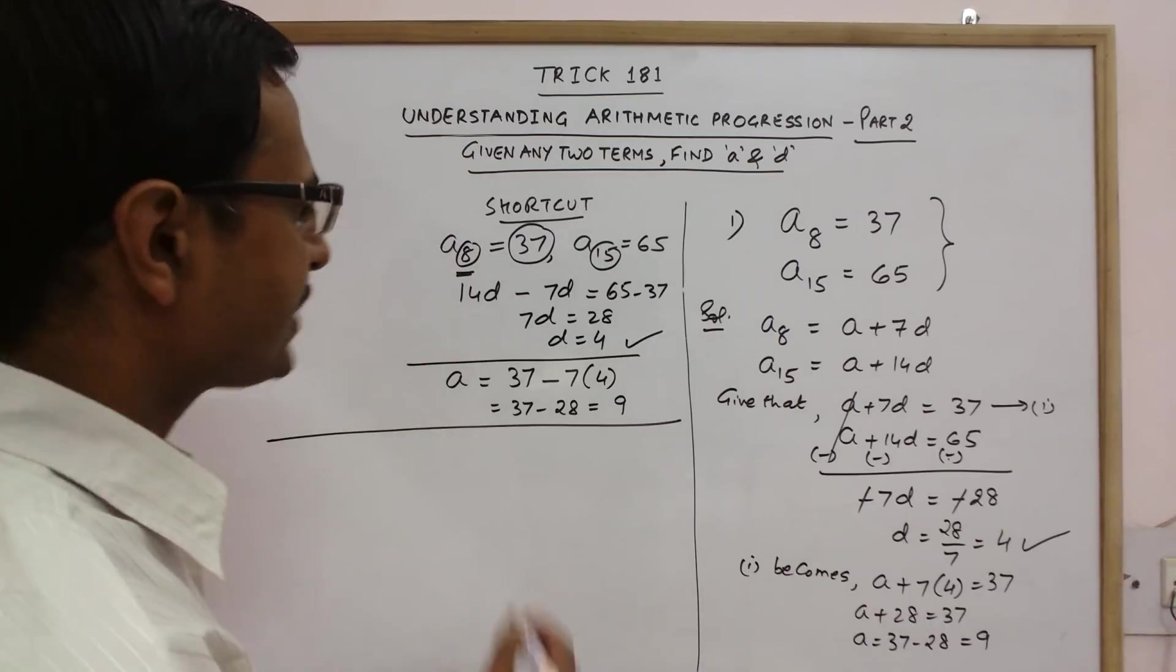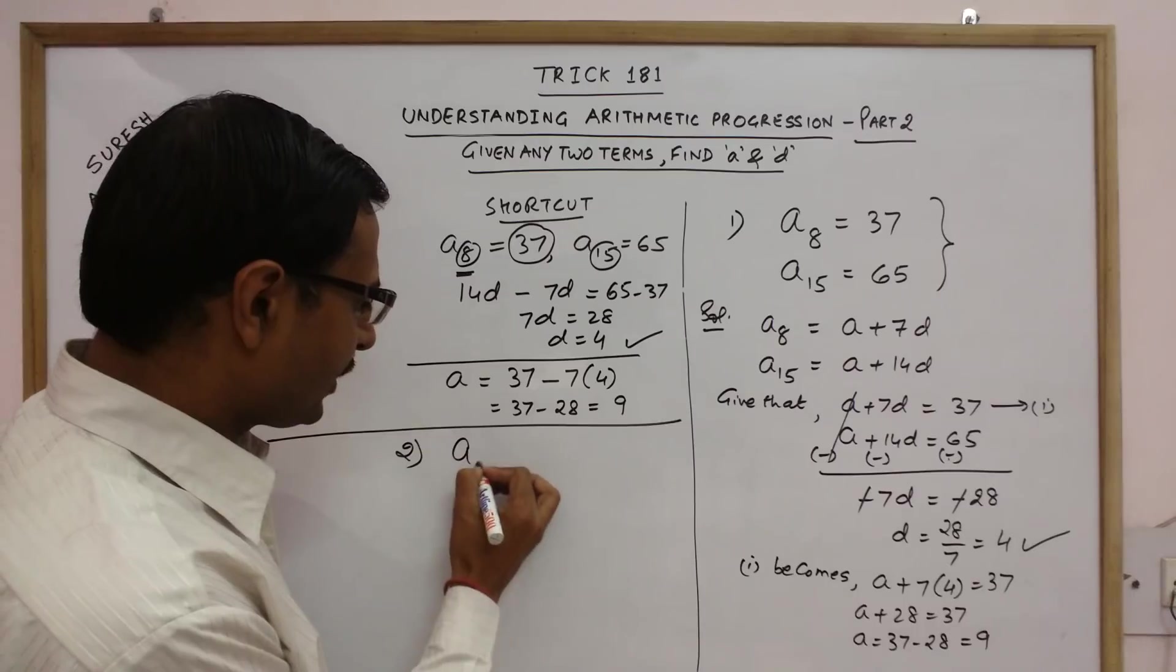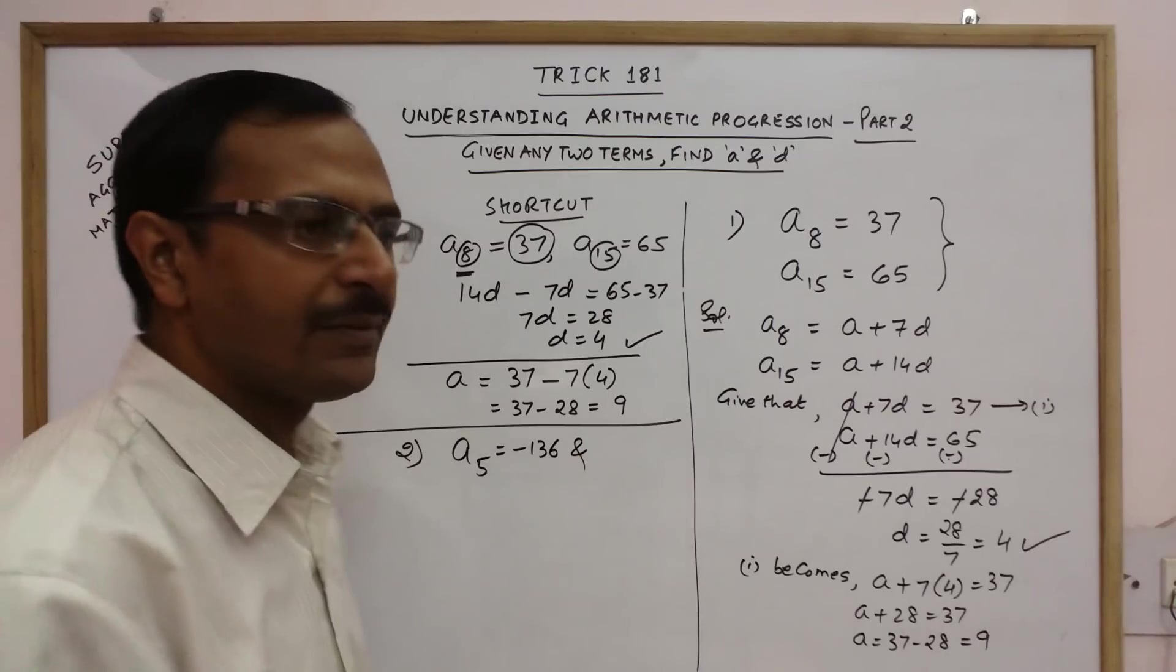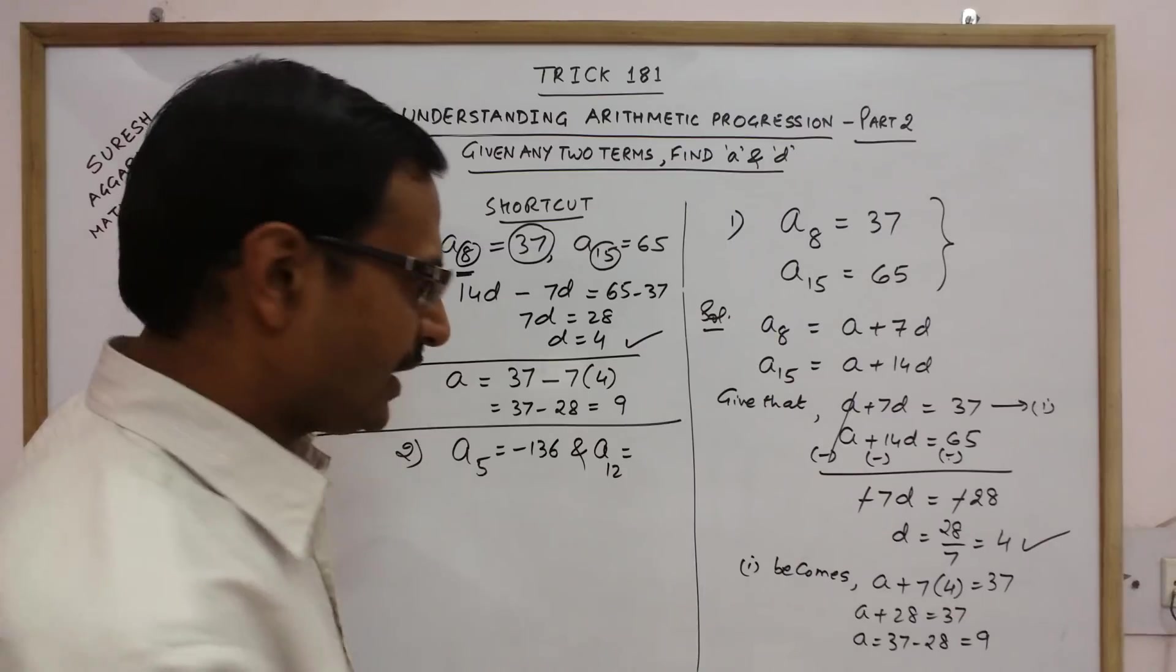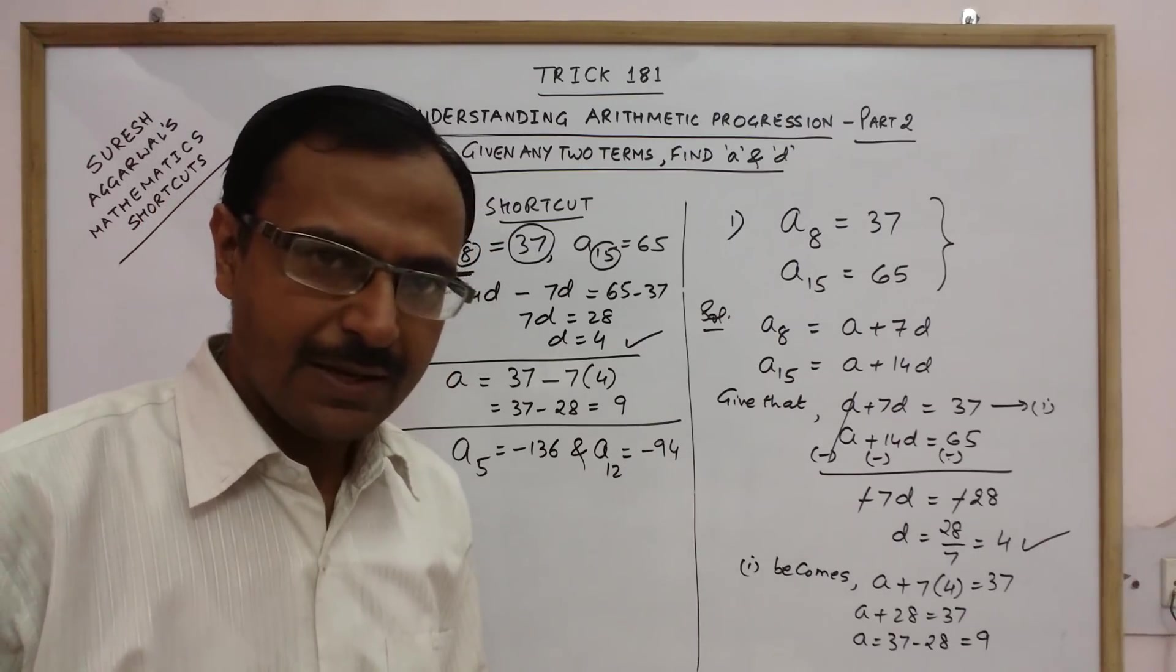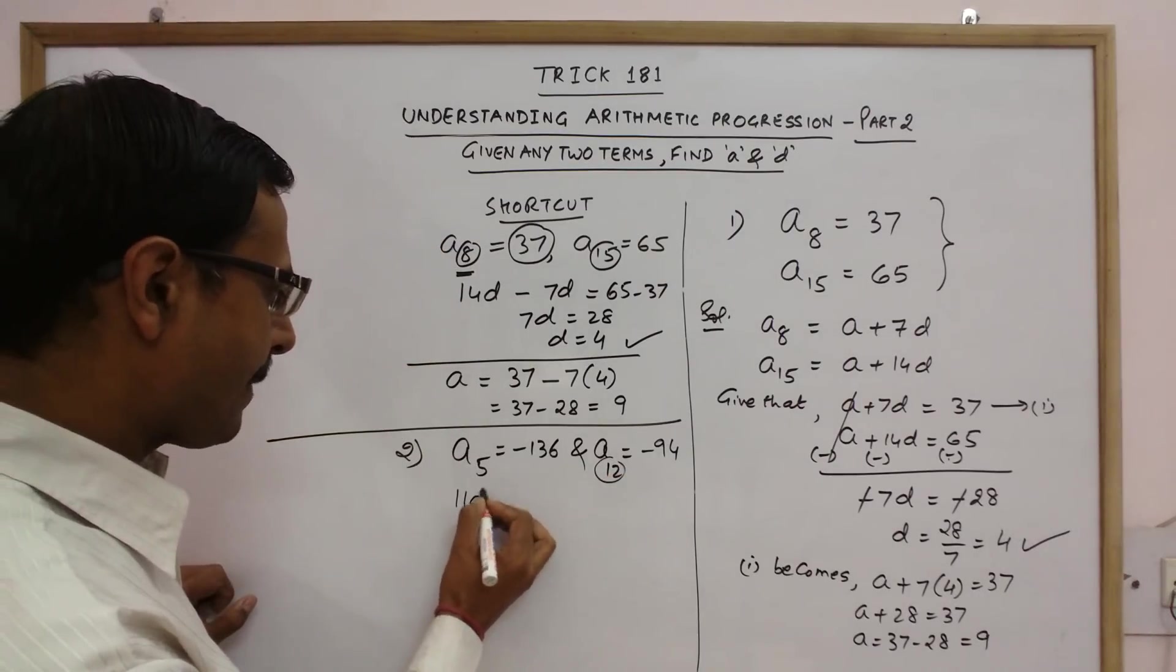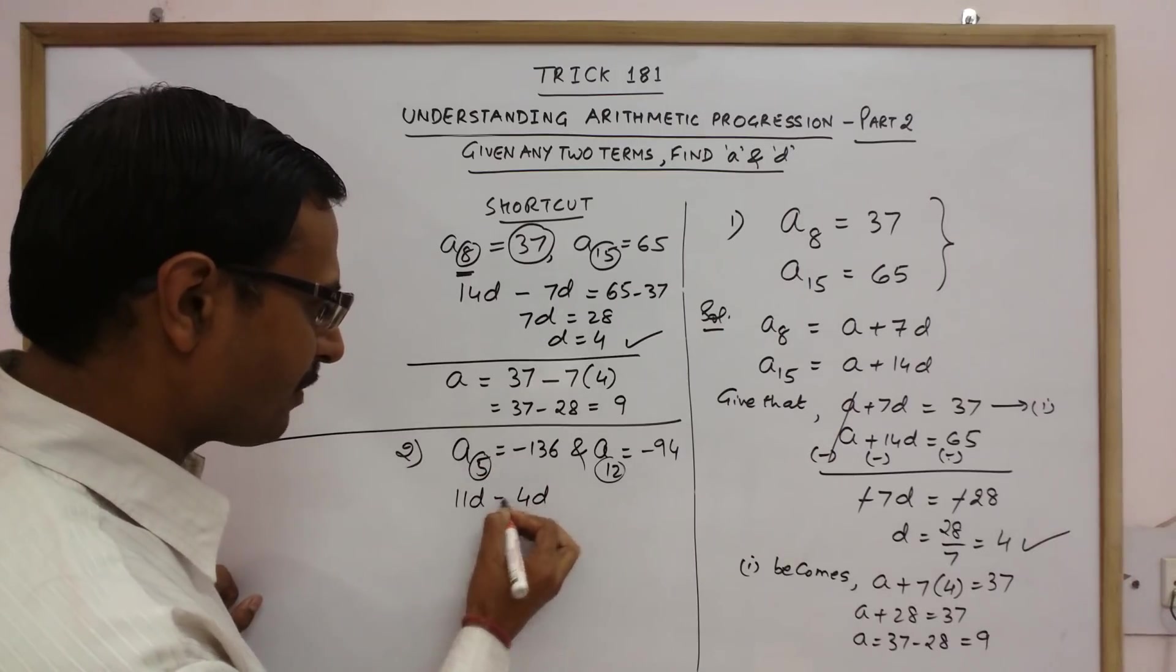Let us try and understand this using one more example. Say we have the 5th term of an AP given as minus 136 and the 12th term of the same AP given as minus 94. Now we need to find the value of A and D. Just as I told you see here we have 12 so write 11D. Here we have 5 so write 4D. Subtract.